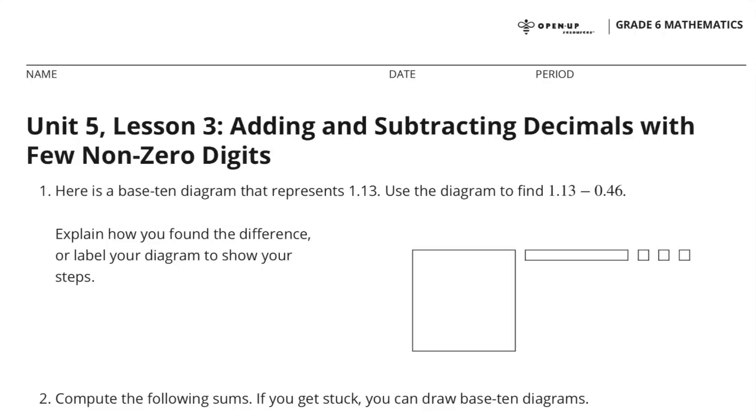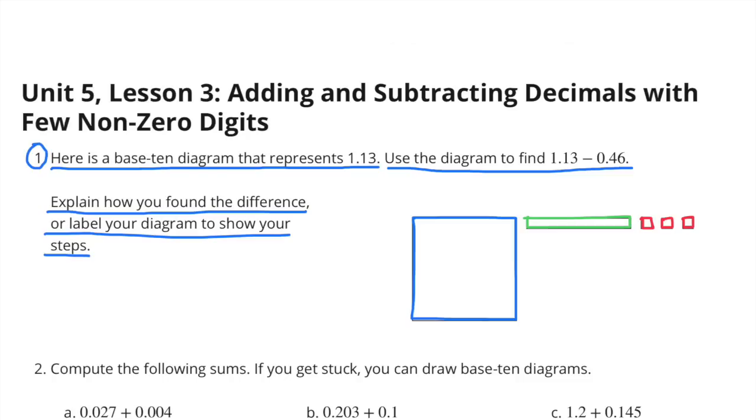Unit 5 Lesson 3: Adding and Subtracting Decimals with Few Non-Zero Digits. Number 1: Here is a base 10 diagram that represents 1 and 13 hundredths. Use the diagram to find 1.13 minus 0.46.